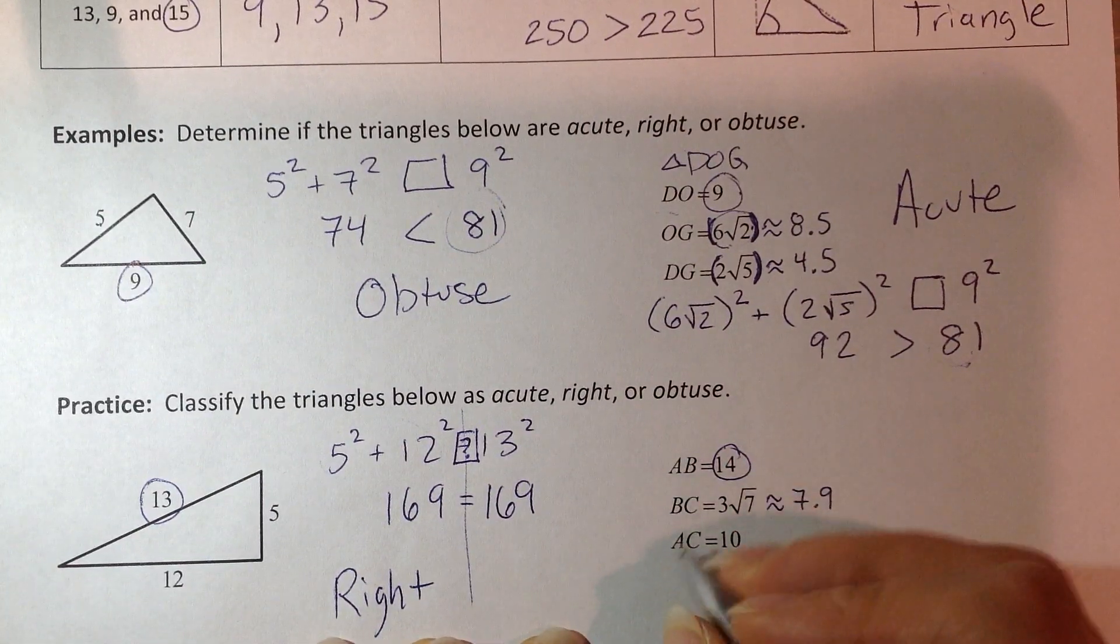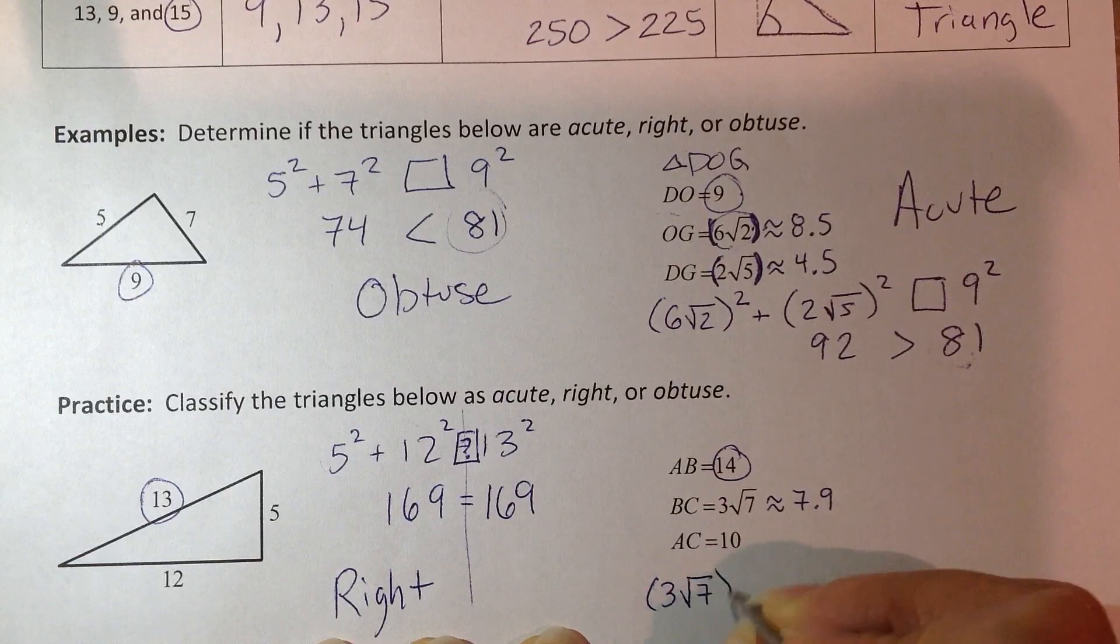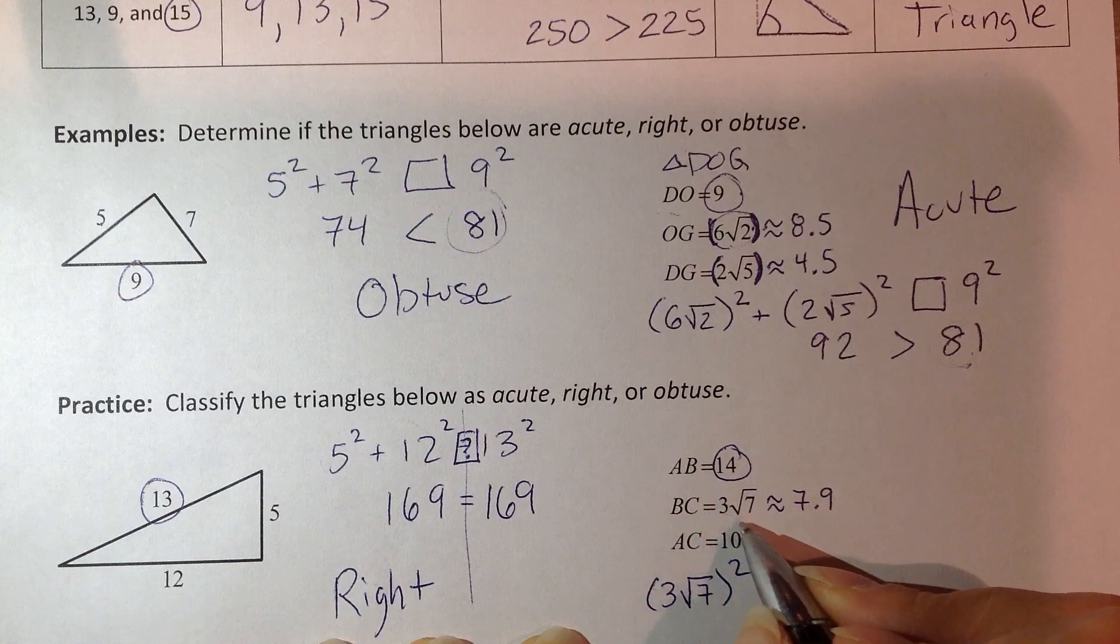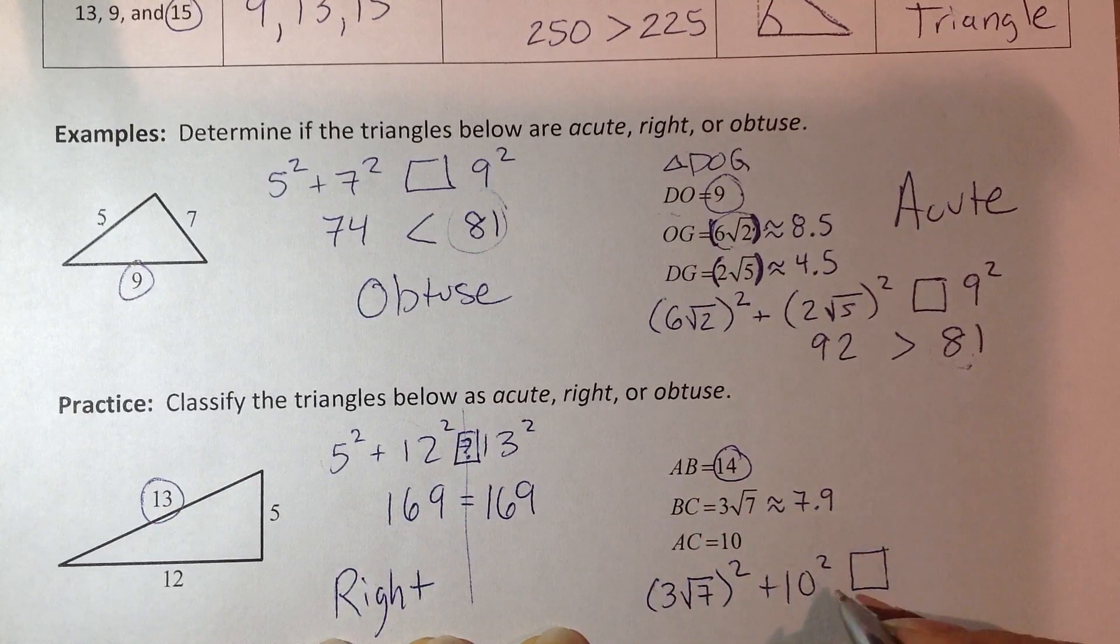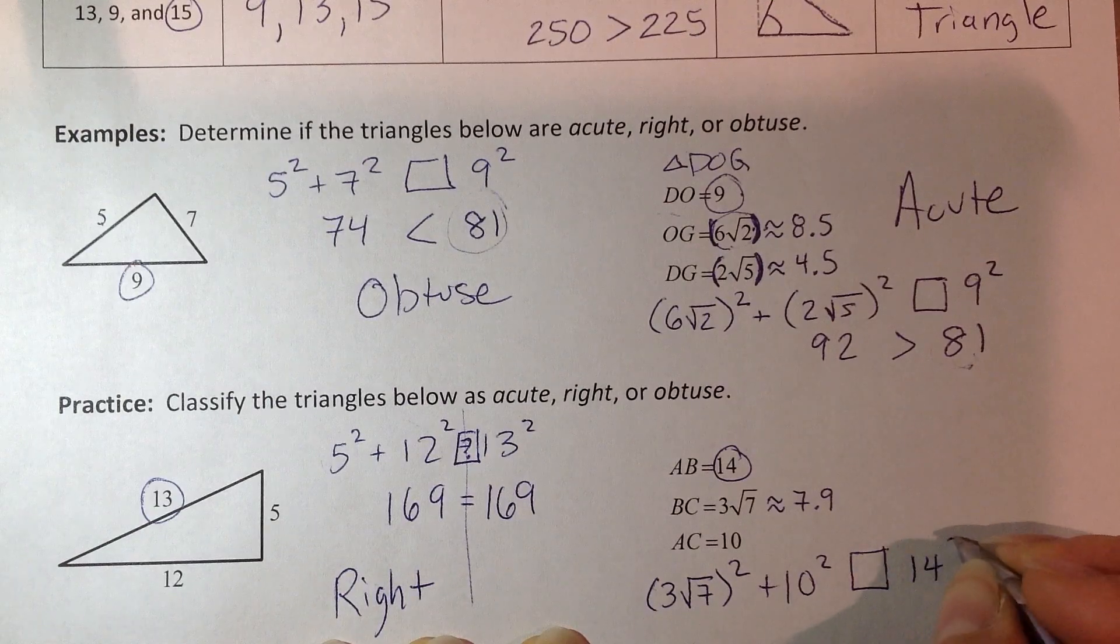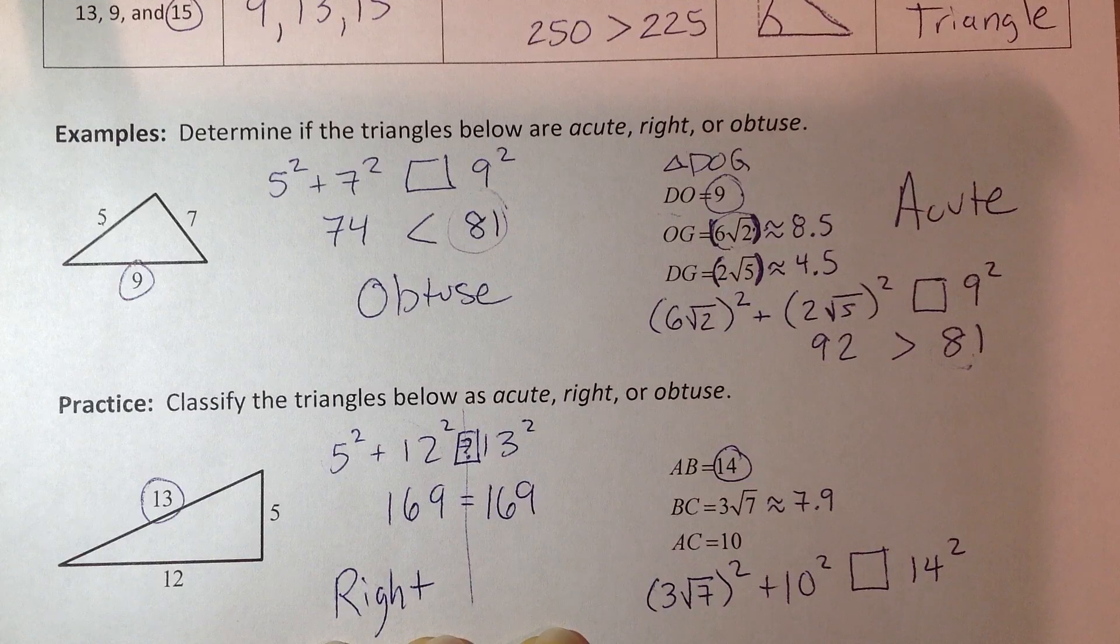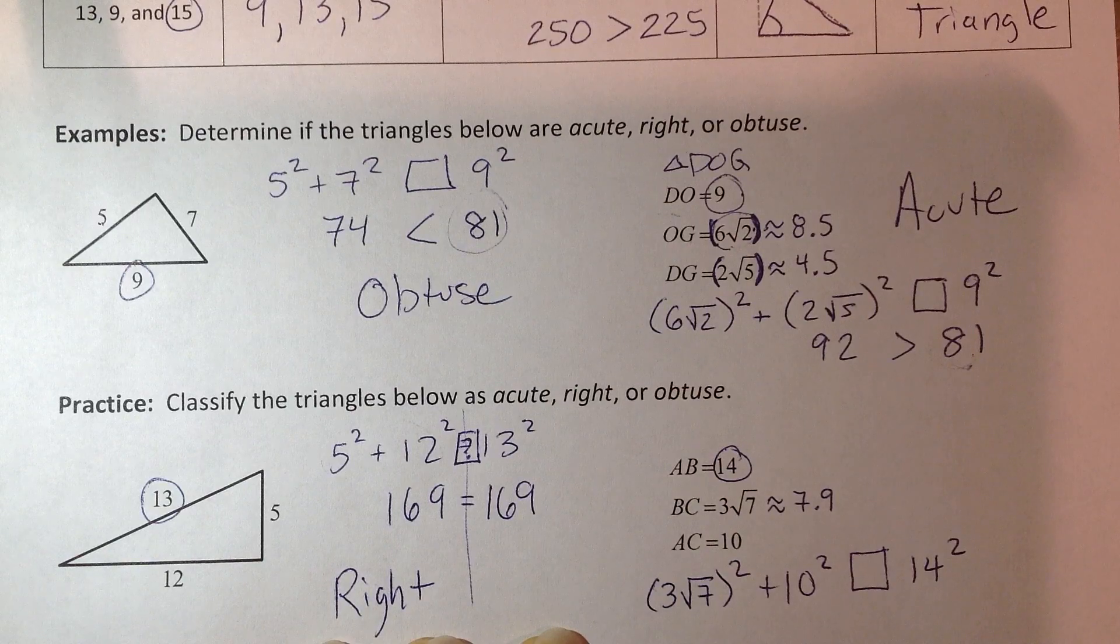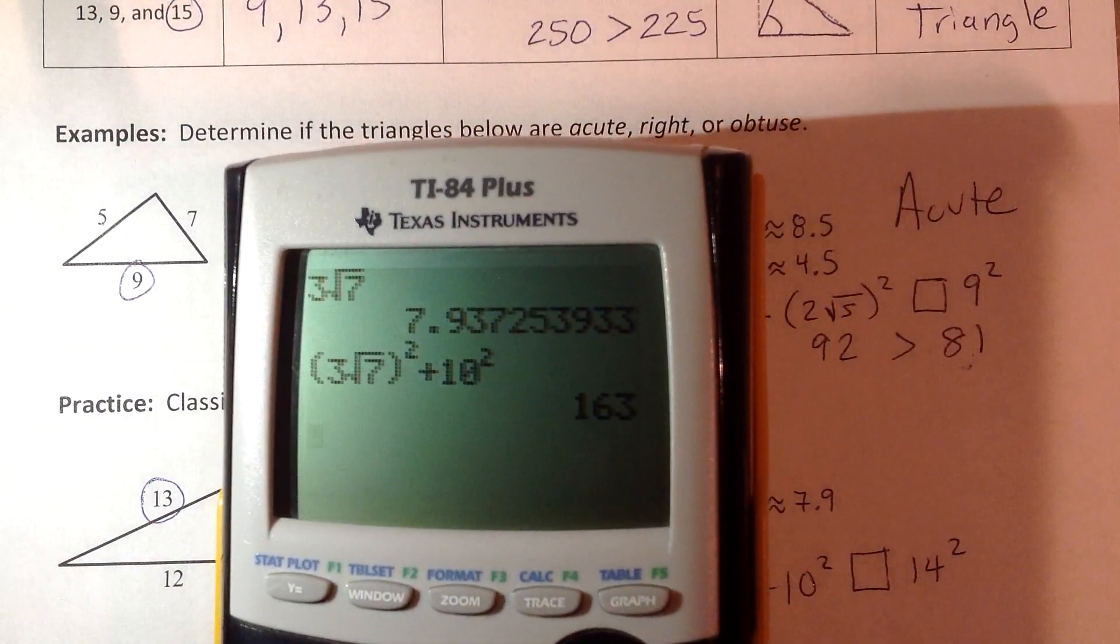I'm going to go ahead and do the two shorter ones. Don't forget our parentheses. Super important around that radical there. 10 is my next one. And then how does that compare to 14 squared? Let's put it all in our calculator. 3 square root of 7. Close that parentheses.